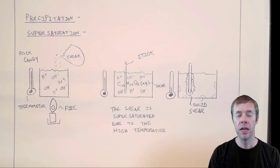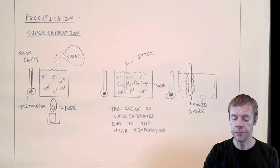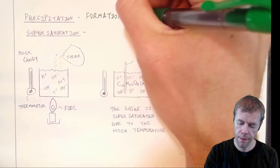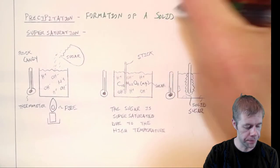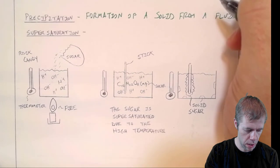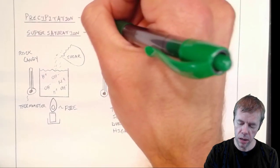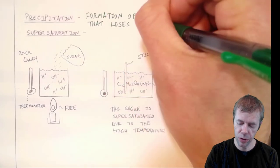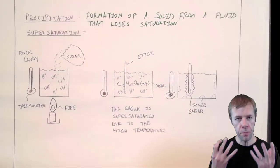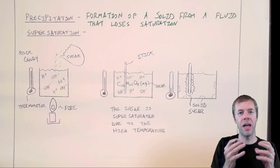The last topic we're going to talk about today is precipitation and supersaturation. This is a twofer. Two at once. First one. Precipitation. It's the formation of a solid, at least in this case it's a solid, from a fluid that loses saturation. So something may become saturated even if it's just locally. And then it may lose that saturation and form a solid.